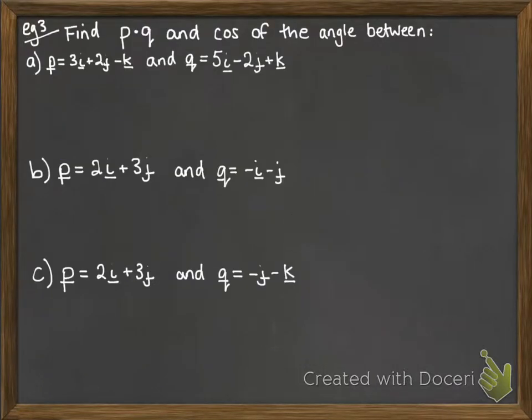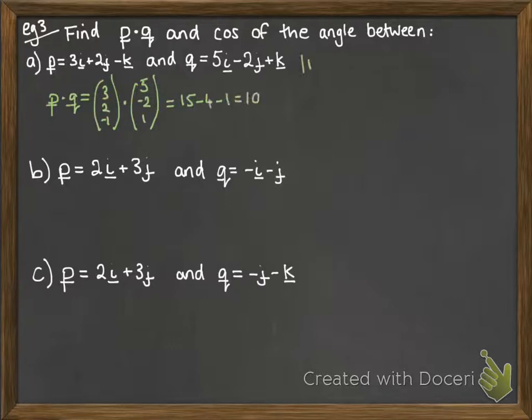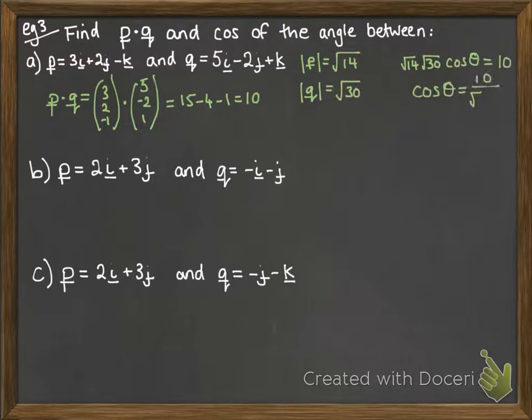And last set of examples here. We're going to find P dot Q and cos of the angle between the following vectors. So we need to work out each of the components that we need to use our scalar product formula. We need P dot Q and the modulus of P and the modulus of Q. Put it all together to work out what our cos theta would be. Now it's important with this one, we're just asked to find cos of the angle. We don't have to go on and solve it to find what the angle was. So we can stop there at cos theta equals something.